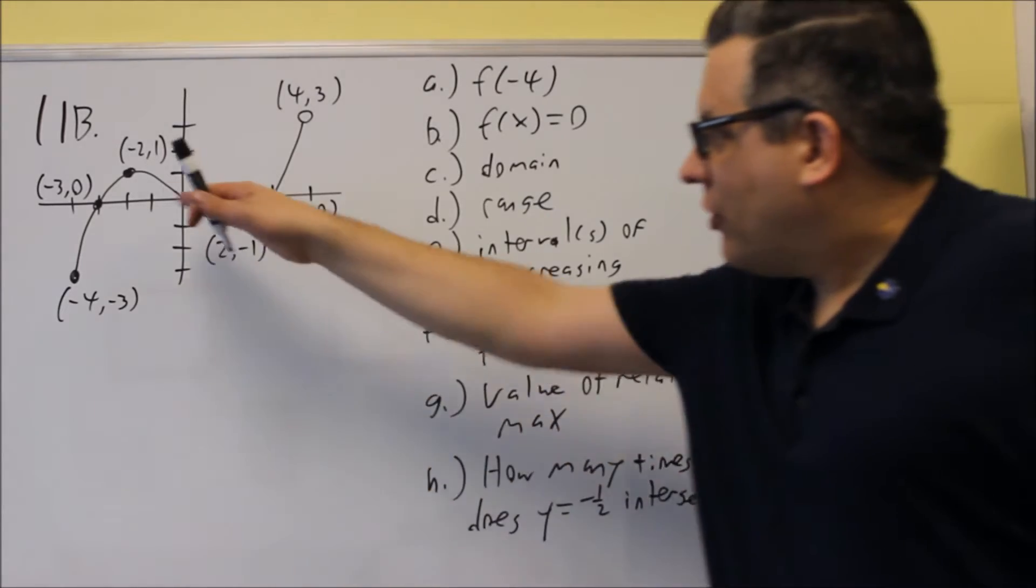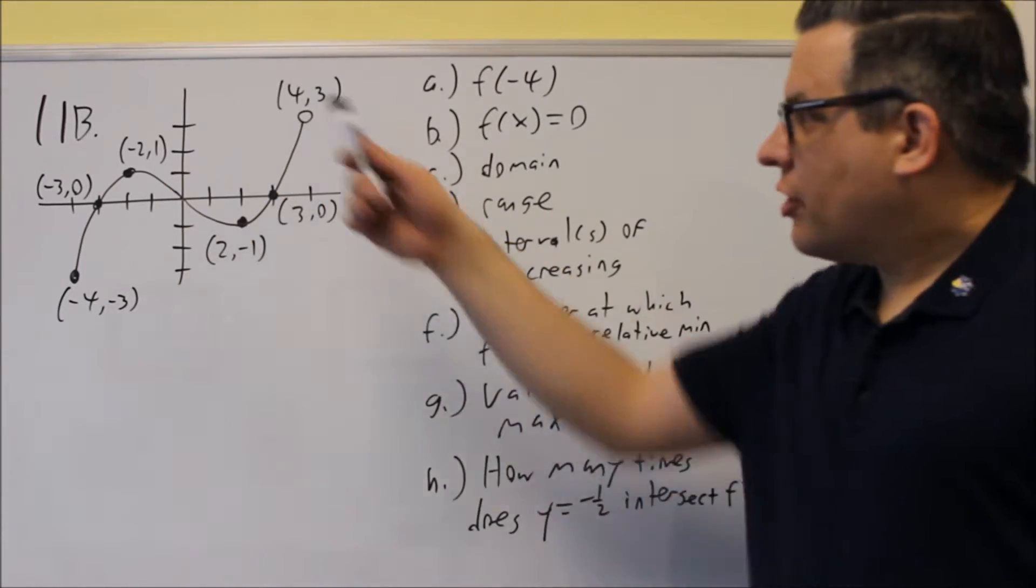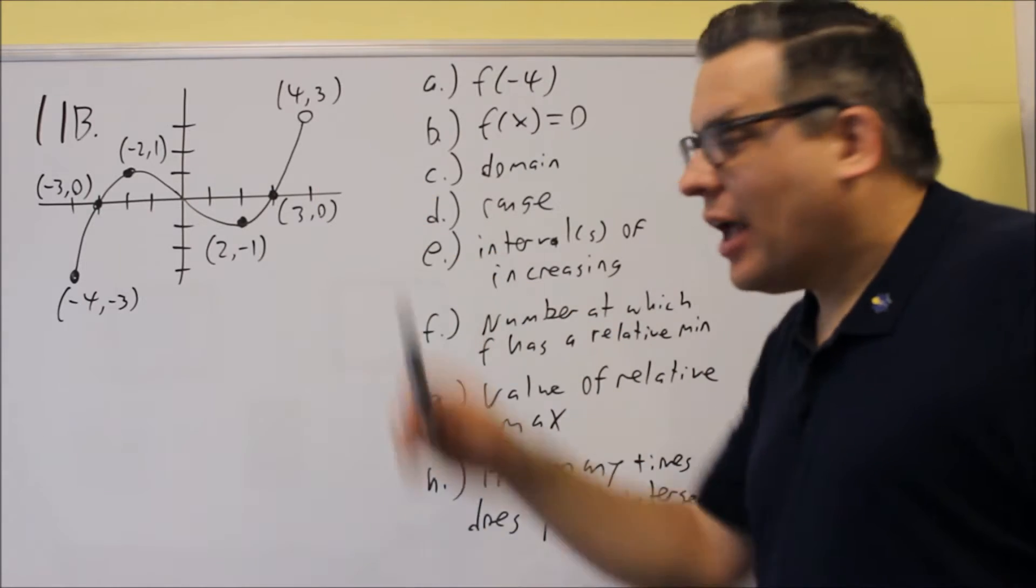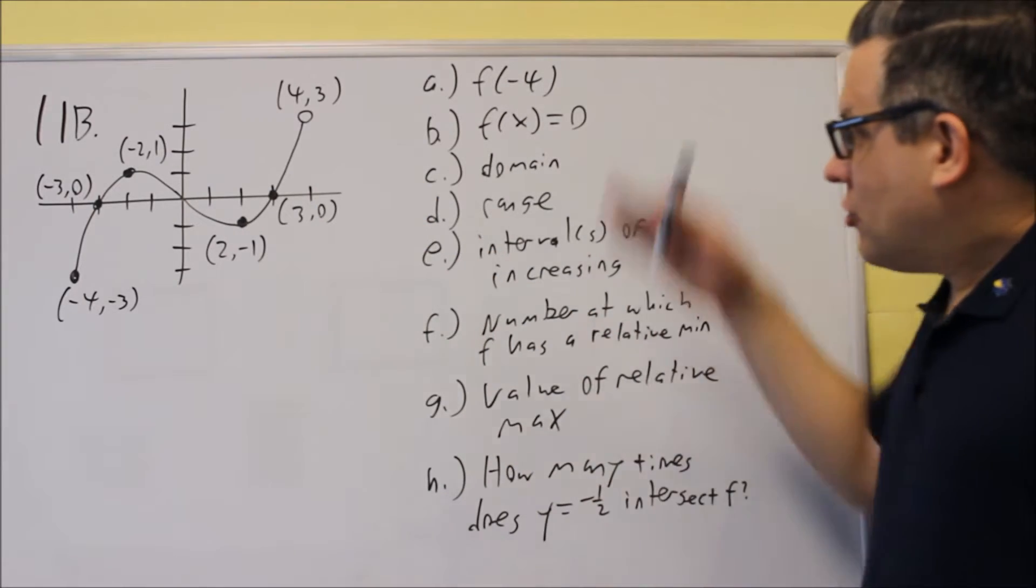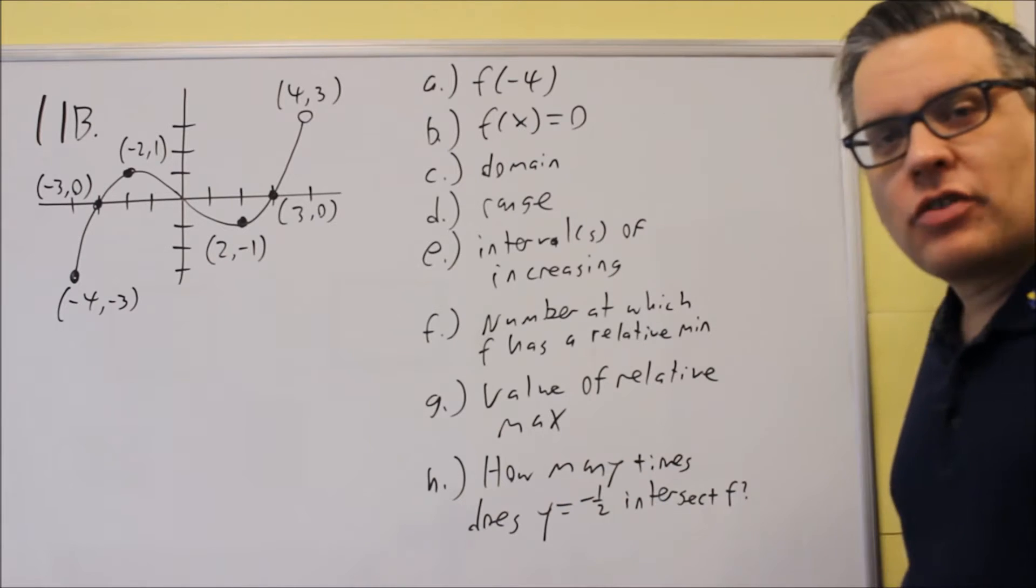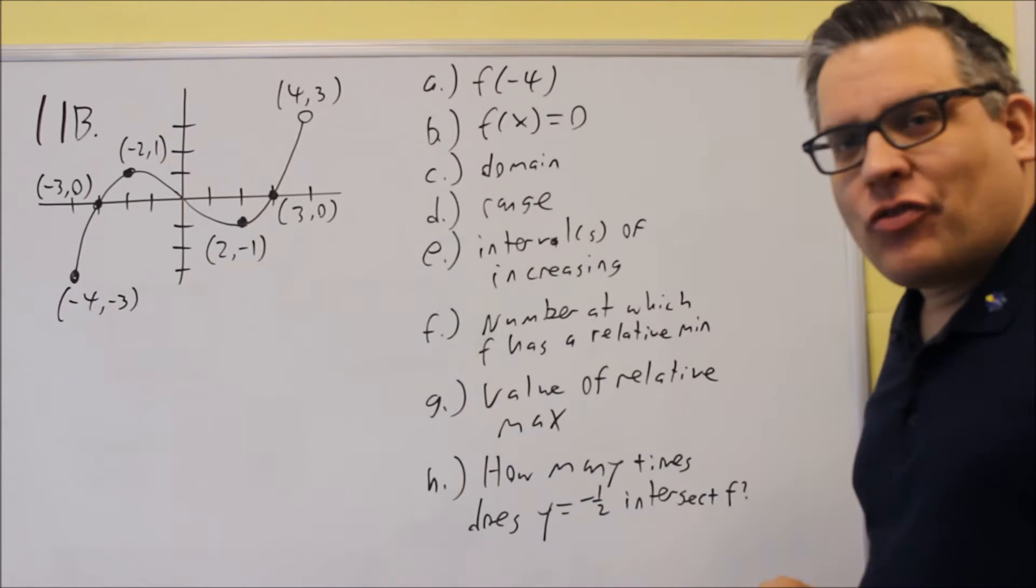Okay, for 11b we have another graph that's here. Notice that there is an open circle at (4, 3). So we're going to answer the same questions again, but we have a different graph this time. So we want f of -4.